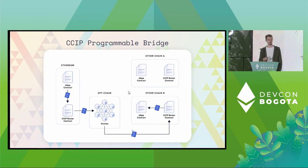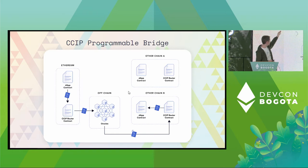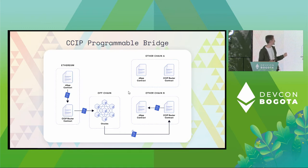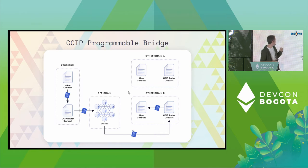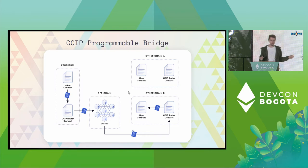We're working on a programmable bridge that enables a smart contract on Ethereum to send a message to a contract running on some other chain — it could be talking to multiple other chains. The message can carry both data, so some kind of arbitrary binary payload, as well as value, so tokens.